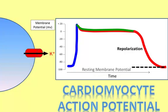Once the resting membrane potential has been restored, the cardiomyocyte action potential is complete. The cell can then be activated again to start the whole process all over again.